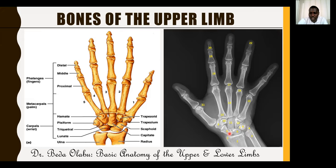The distal row of carpal bones, starting from medially going laterally: hamate, capitate, trapezoid, and trapezium. The distal row articulates with the metacarpals. The proximal row articulates with the bones of the forearm, apart from the pisiform which is a sesamoid bone.